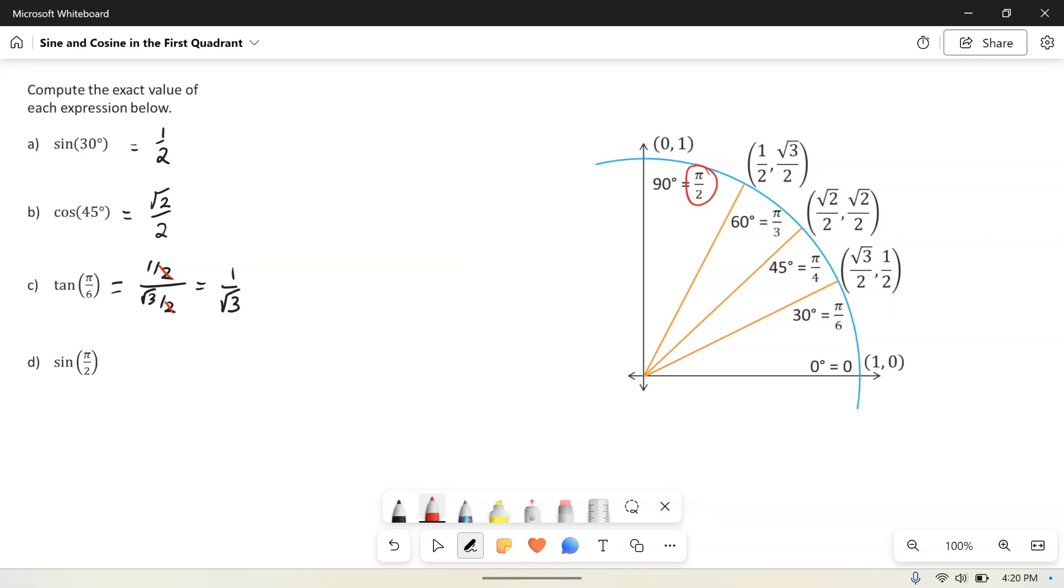Pi over 2 corresponds to 90 degrees, and so pi over 2 is actually a quadrantal angle. It's a fancy little term, but it just means that it's an angle that corresponds to one of the axes. In this case, pi over 2 lands on the positive y axis.